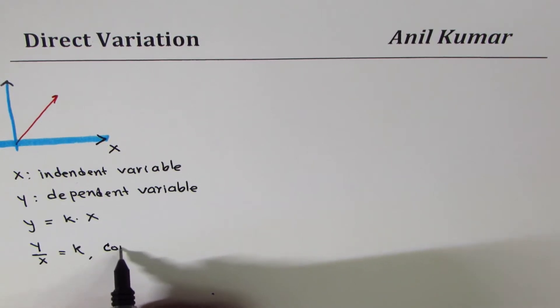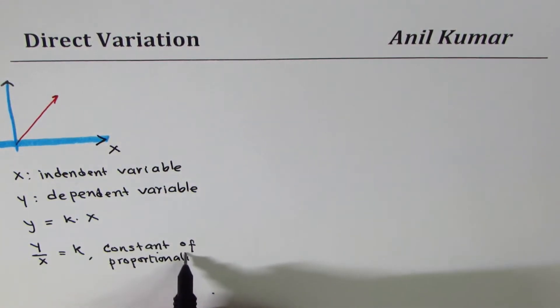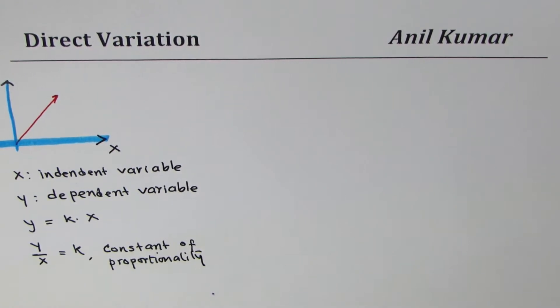So that k is called constant of proportionality. This is called constant of proportionality. So in short this is what direct variation is.